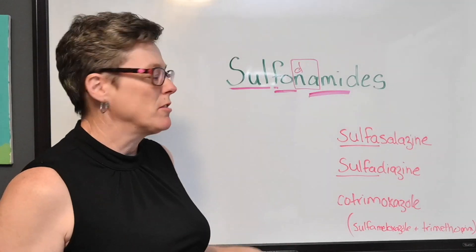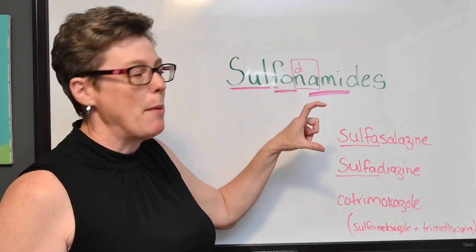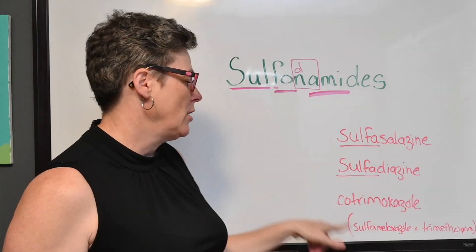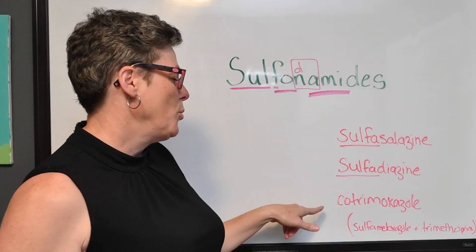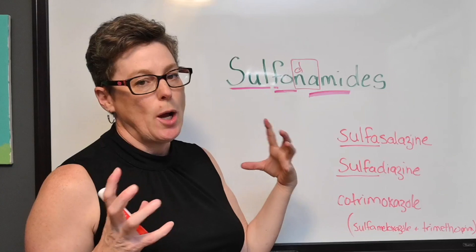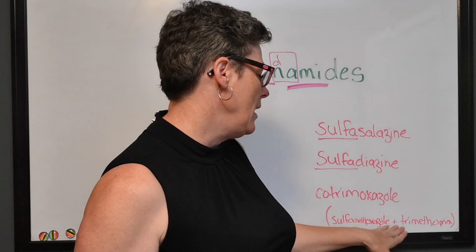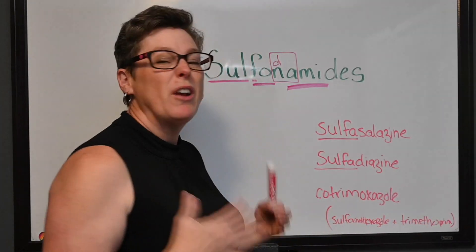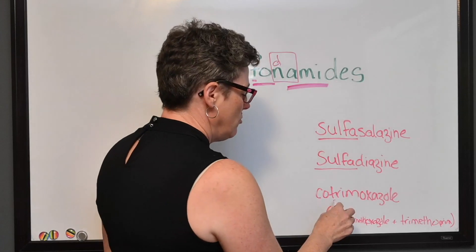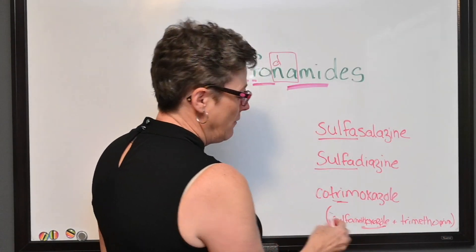When it comes to naming the generic drugs — remember generic uses a lowercase letter and a brand name starts with a capital letter — we have sulfasalazine, sulfadiazine, and cotrimoxazole. Cotrimoxazole is a combination of two drugs: one being a sulfa drug — sulfamethoxazole — and trimethoprim. So if you ever have a test question asking which two drugs make up cotrimoxazole, remember trimethoprim and the 'moxazole' ending of your sulfa drug.